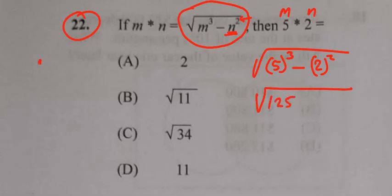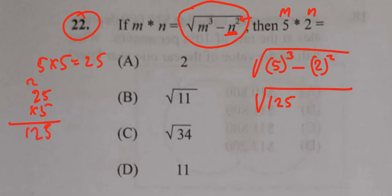If you want to look at that, 5 times 5 is 25, and then 25 times 5 is 125.